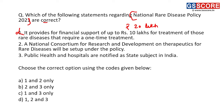Second statement: a National Consortium for Research and Development for Therapeutics for Rare Diseases will be set up under the policy — this is a correct statement. Third statement: public health and hospitals are notified as a state subject in India — this is also a correct statement. Only the second and third statements are correct, so the answer is B — 2 and 3 only.